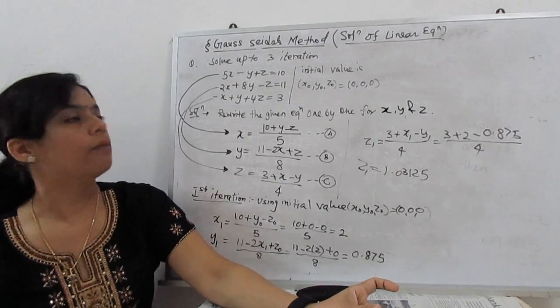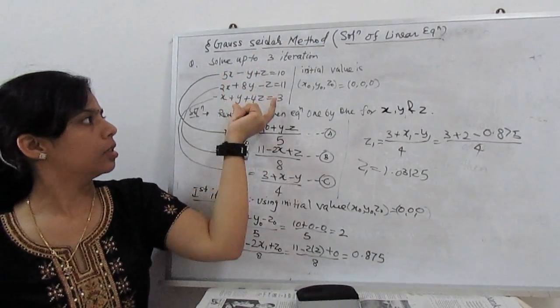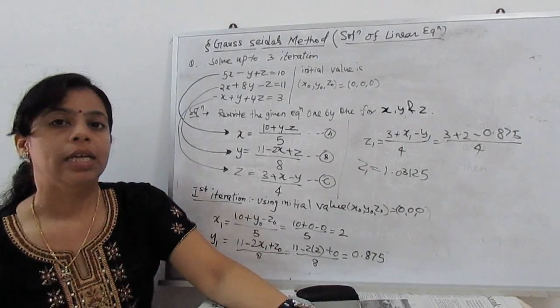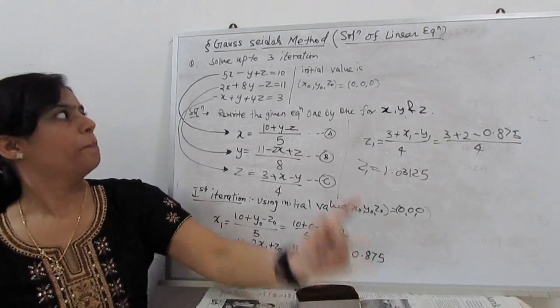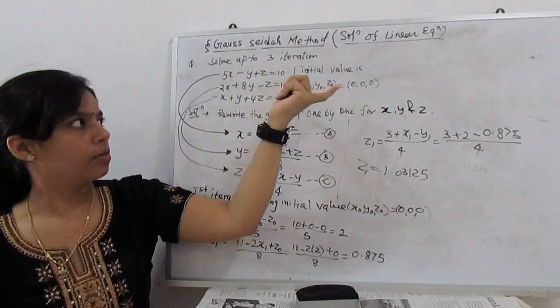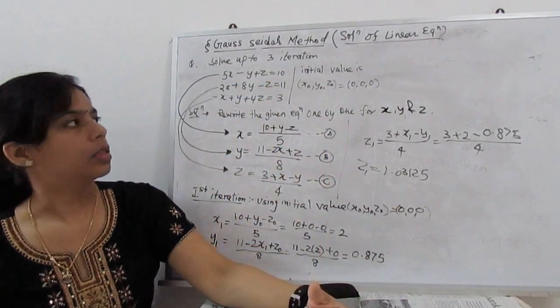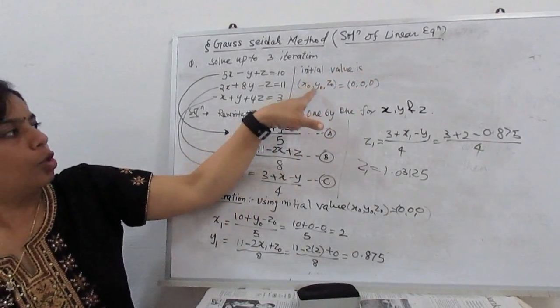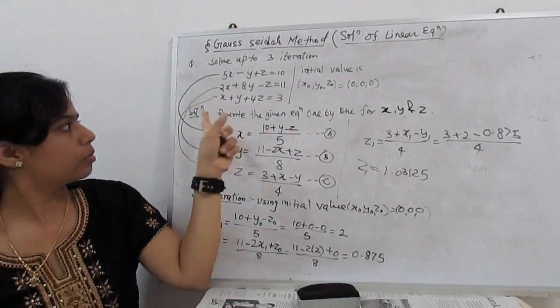Solve up to three iterations. We have the system of equations. This is the same example which I take in the previous, so you will see what is the difference between both methods. Step one is the same. Initial value given: X0, Y0, Z0 equal to 0, 0, 0.